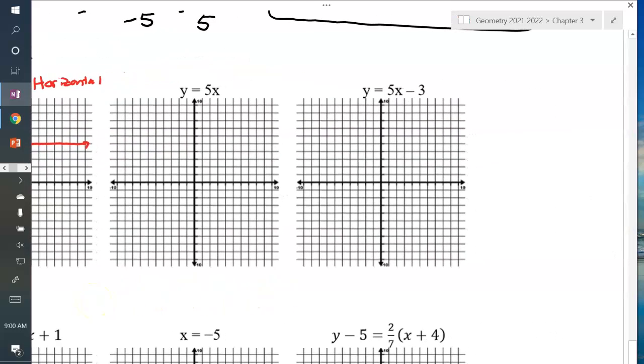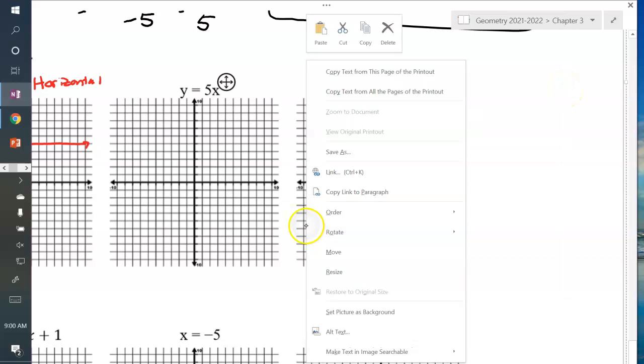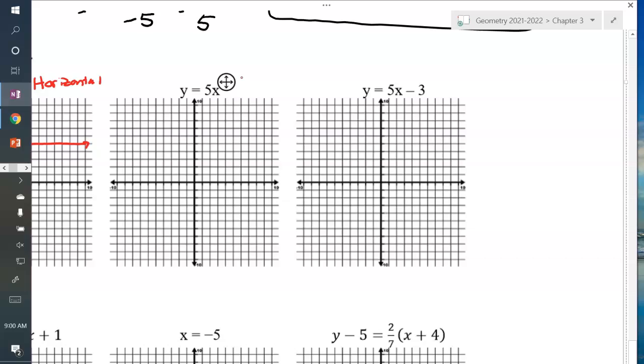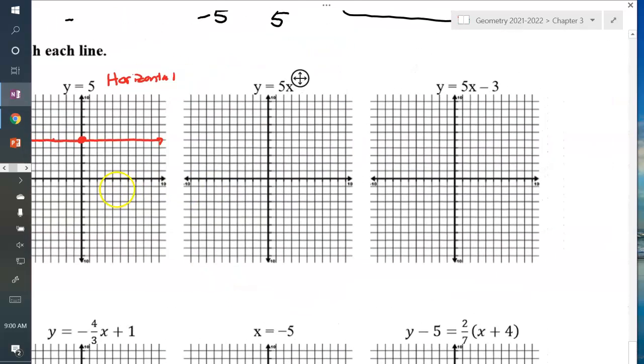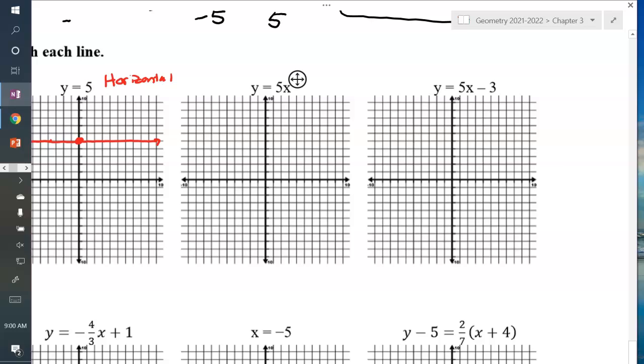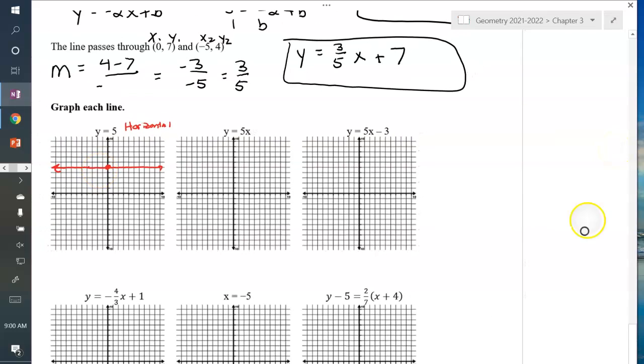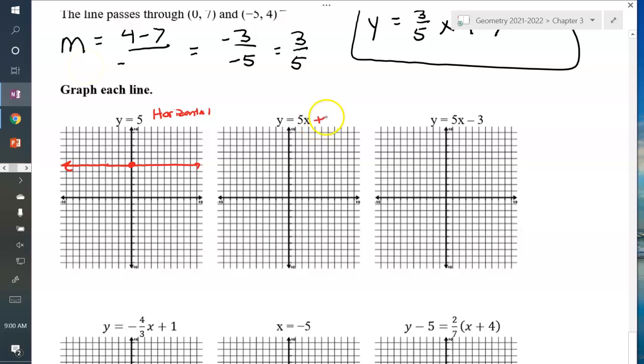Next one, y equals 5x. That's the same thing as 5x plus 0. Which means my y-intercept is right here at the origin. My slope is 5. So I'm going to count up 5 boxes and over 1 box. So 1, 2, 3, 4, 5 over 1. And there's my line.